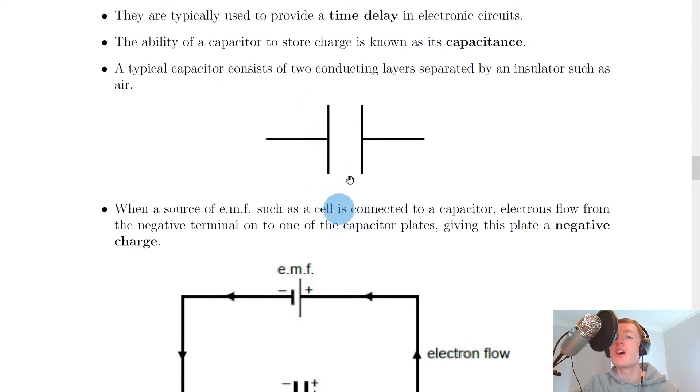So we've got our two conducting layers, which could be two metal plates for example, and these are separated by air, which is our insulating layer.